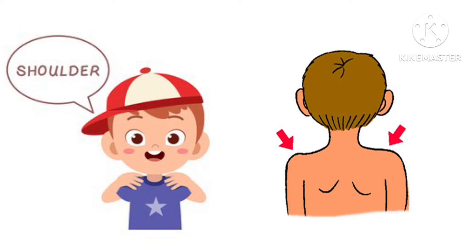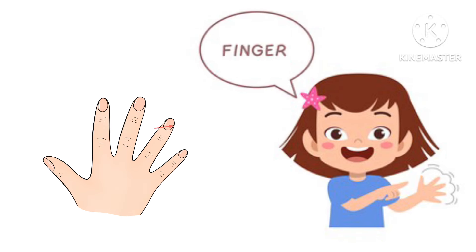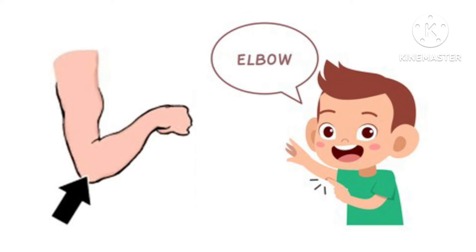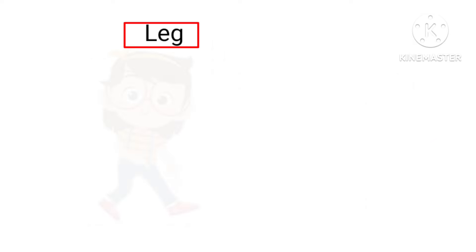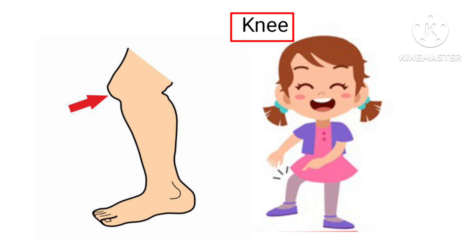Shoulder — touch your shoulders. Hand — wave your hand. Finger — make a fist with your fingers. Elbow — show your elbow. Leg — come on children, let's jump with your legs. Knees — touch your knees.